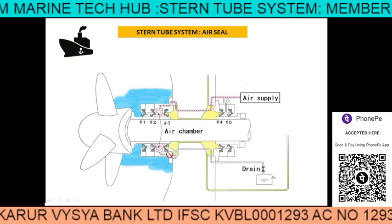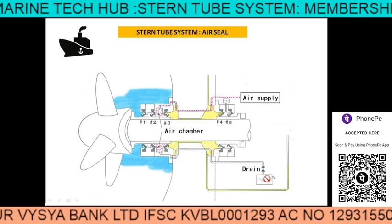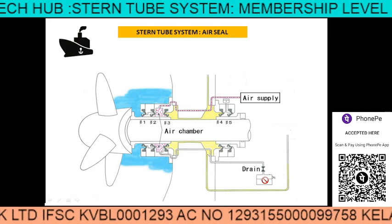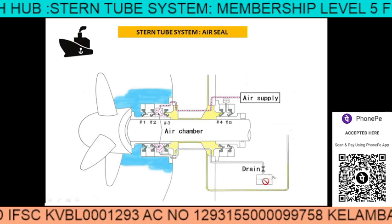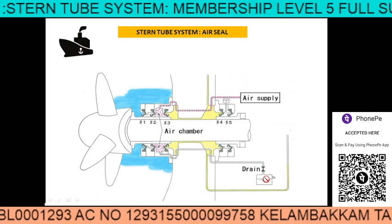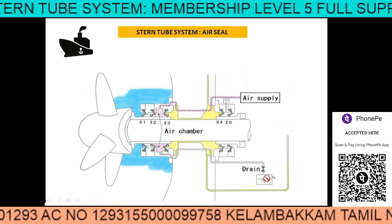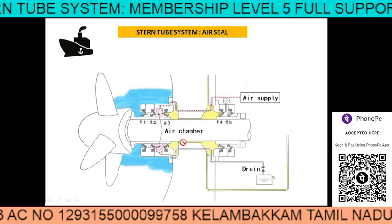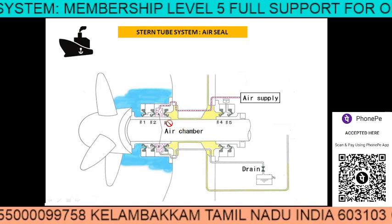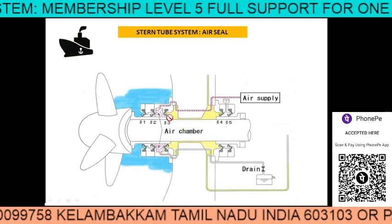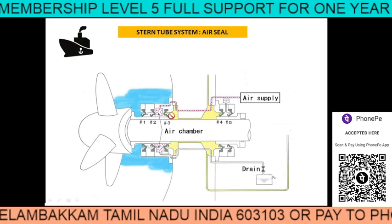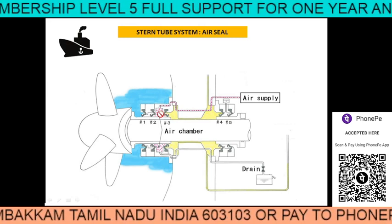You come to know by daily observation of the drain tank — the sea water will come here and collect. That is one part of it. Second part: if sealing ring number 3 is damaged, then there is a possibility of oil coming here.